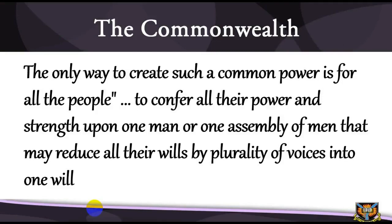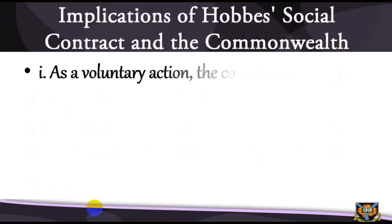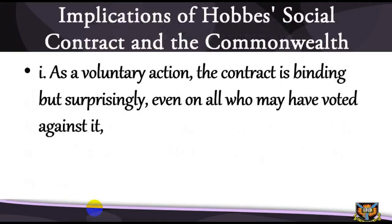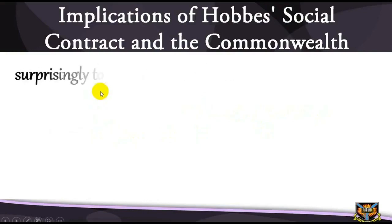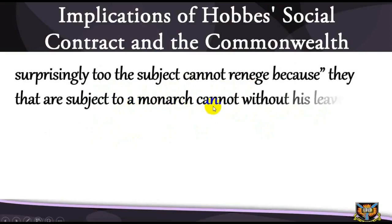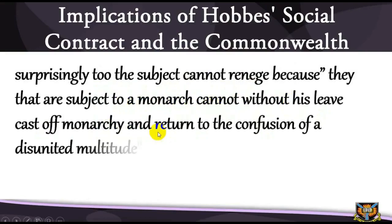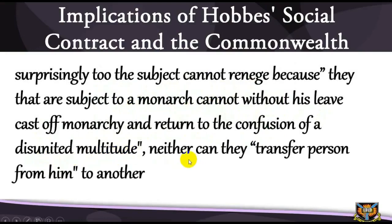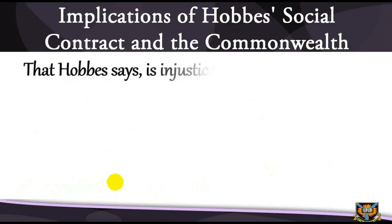Implications of Hobbes's social contract and the commonwealth: we note the following salient features and implications. As a voluntary action, the contract is binding — but surprisingly even on all who may have voted against it. The subject also cannot renege because 'they that are subject to a monarch cannot without his leave cast off monarchy and return to the confusion of a disunited multitude.' Neither can they transfer that person from him to another — that, Hobbes says, is injustice. And they cannot even depose him; to do that is also injustice, because it will mean taking from him that which is his own. Loyalty to the monarch is total.